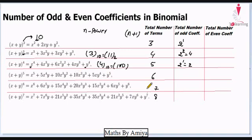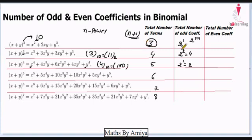We can generalize this. The total number of terms is n+1. Total number of odd coefficients is 2 raised to power m, where m is the number of 1's in the binary notation of the power. Total number of even coefficients is total number of terms minus total number of odd coefficients.